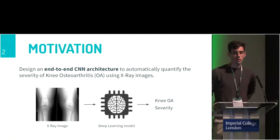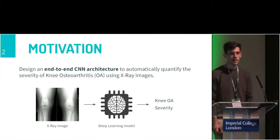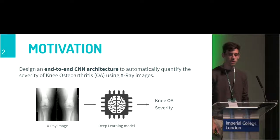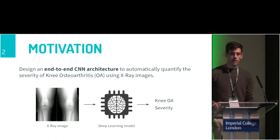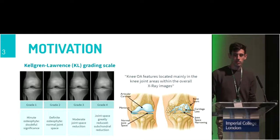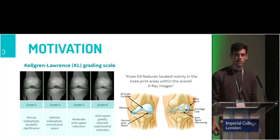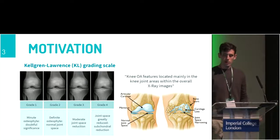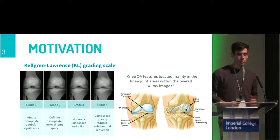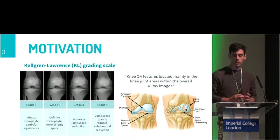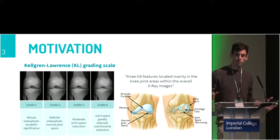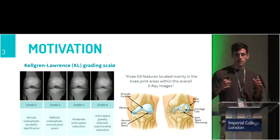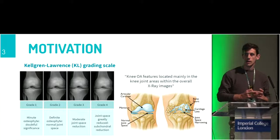The motivation of our method was to design an end-to-end convolutional architecture to automatically quantify knee severity in X-ray images. Most of the gold standards in medicine use the Kellgren-Lawrence grading scale to quantify the severity of knee images. This grading scale concentrates all the information mainly in the knee joint areas, which is located in a very small area of the whole image.